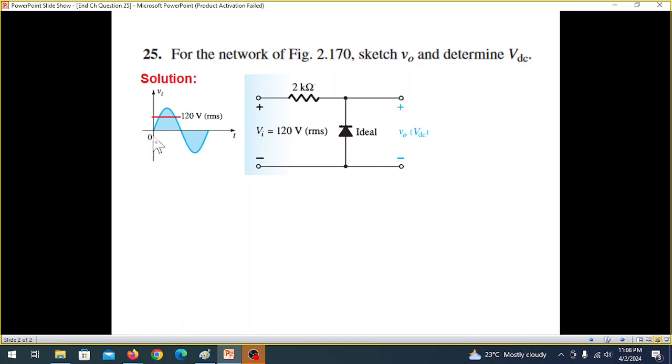Normally our input is a sinusoidal signal. It's 120 volts RMS. For a sinusoidal signal, we use the formula V_maximum equals square root of 2 times V_RMS. So V_maximum equals root 2 times 120, which gives us 169.7 volts.